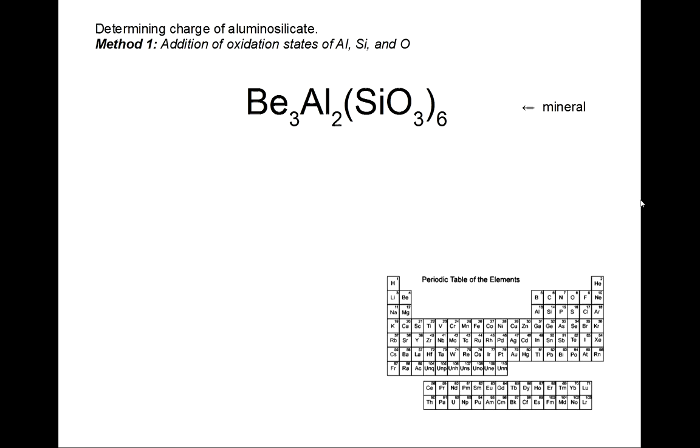Determining the charge of an aluminosilicate or a silicate. The silicate follows the same principles except without counting the aluminum. So if the aluminum is there it's probably an aluminosilicate and you can follow this process. If not, you just skip the step where you add the aluminum.